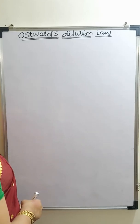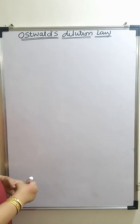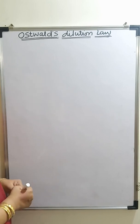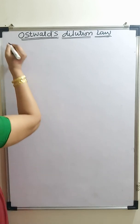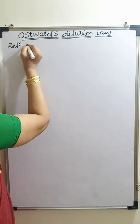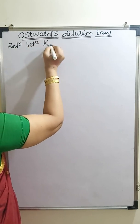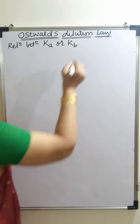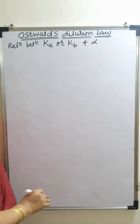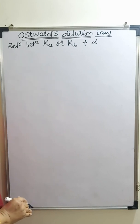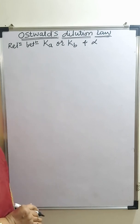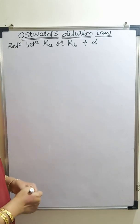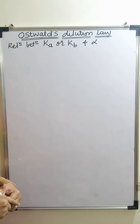In today's video, we are going to see Ostwald's dilution law. What is Ostwald's dilution law? To understand that, let us see what is the derivation for this. Ostwald's dilution law gives you the relation between the dissociation constant of the acid or the dissociation constant of the base and degree of dissociation. You have to consider always a weak acid and a weak base.